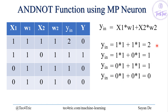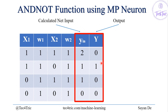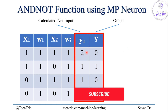We calculate all the values: for x1=1 and x2=1 it will be 2, for x1=1 and x2=0 it will be 1, for x1=0 and x2=1 it will be 1, and for x1=0 and x2=0 it will be 0. So the net inputs are 2, 1, 1, 0.